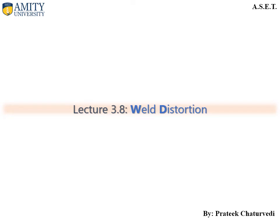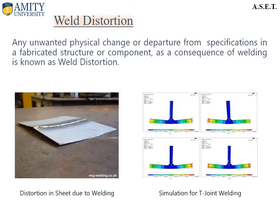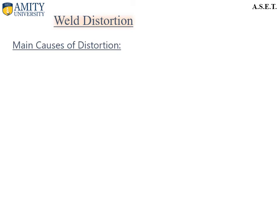In this session we are going to discuss weld distortions. Any unwanted physical change or departure from the specification in a fabricated structure or component as a consequence of welding is known as weld distortion. We can see two images: in image one, distortion due to heat from welding, and in the other image, simulation of T-joint welding subjected to distortion. Here are the main causes of distortion.